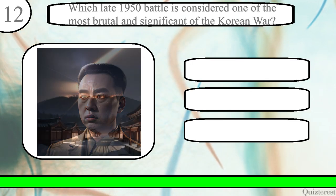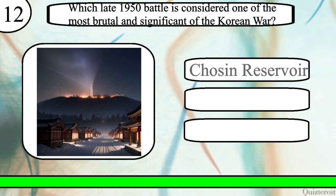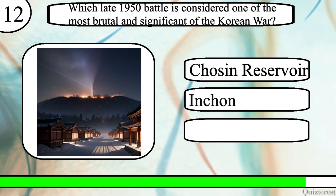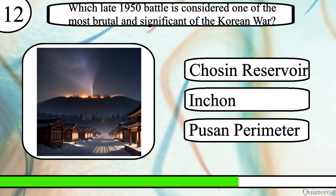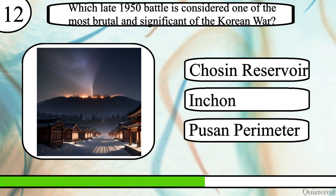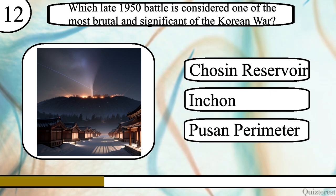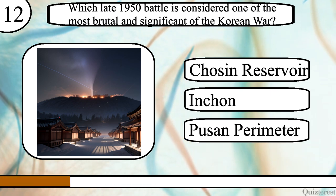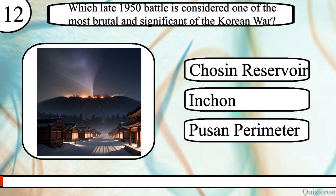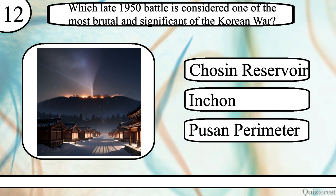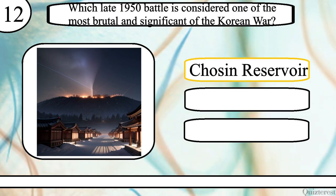Question 12. Which late 1950 battle is considered one of the most brutal and significant of the Korean War? Chosin Reservoir, Incheon, or Pusan Perimeter? The correct answer is the Battle of Chosin Reservoir.